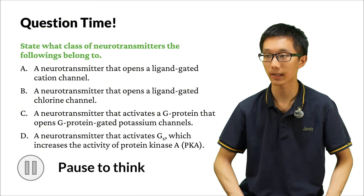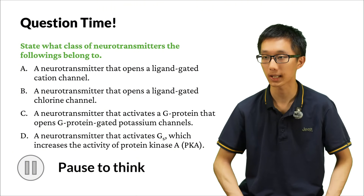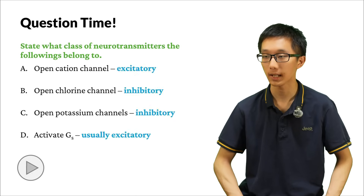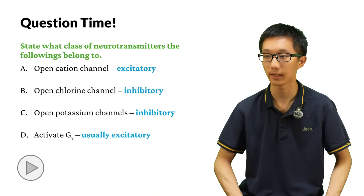Now, try to classify these neurotransmitters into excitatory and inhibitory. A: a transmitter that opens a ligand-gated cation channel. B: a transmitter that opens a chloride channel. C: a transmitter that activates a G-protein which increases the activity of PKA. A is excitatory because it opens cation channels. B is inhibitory because it opens chloride channels. C is inhibitory because it opens potassium channels. And D is likely excitatory because it activates a Gs protein.